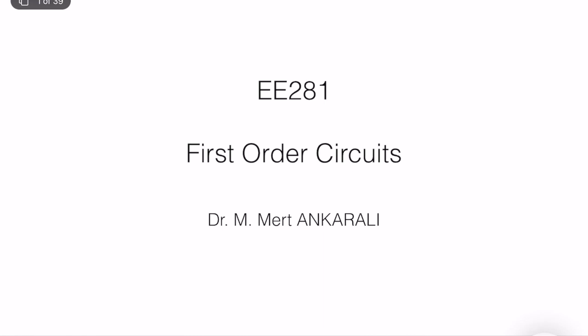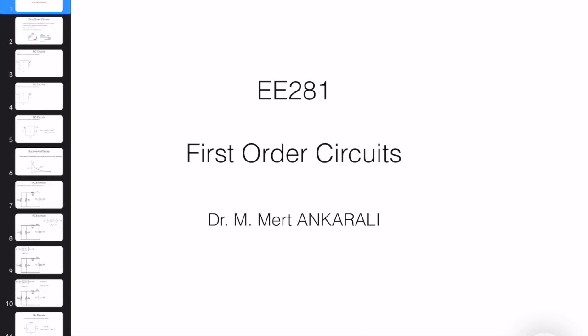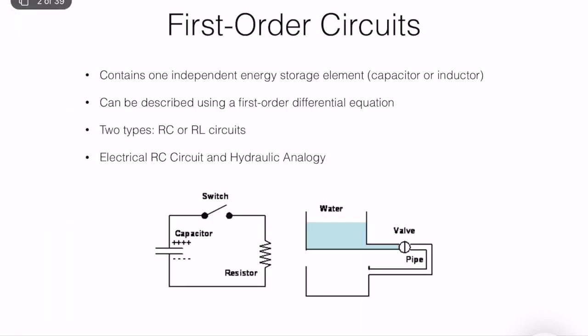Hello everybody. Today I would like to talk about first-order circuits in electrical systems. A first-order circuit in electrical framework contains one independent energy storage element — it should be independent — and it can be either an inductor or capacitor. The circuit should be described using a first-order differential equation. So these are the two important concepts. There are two types of first-order circuits in electrical systems: